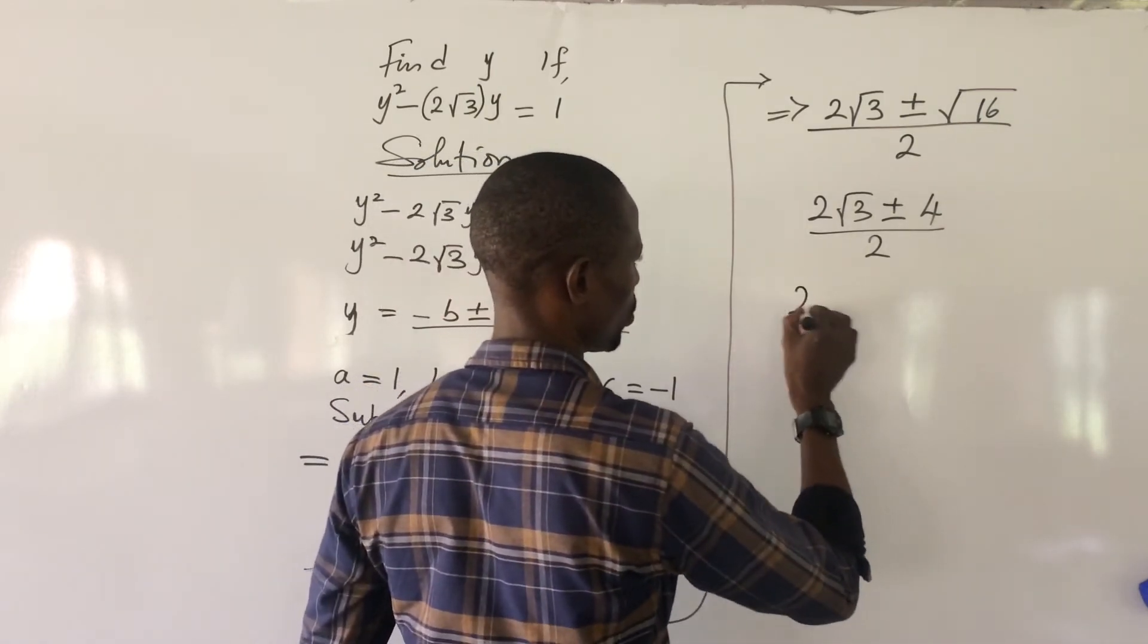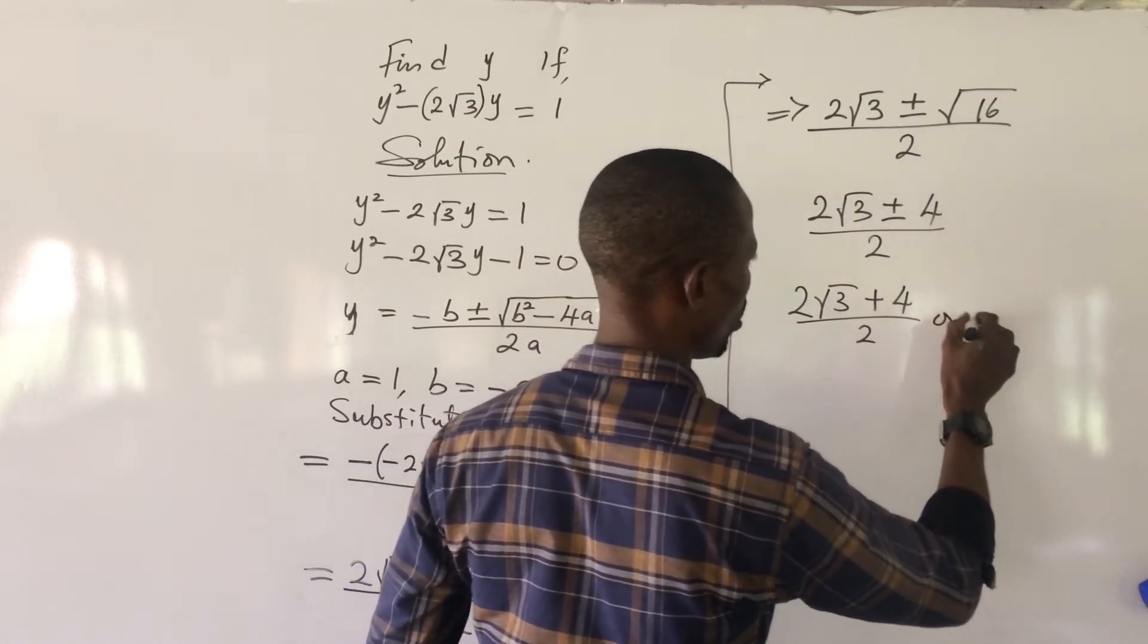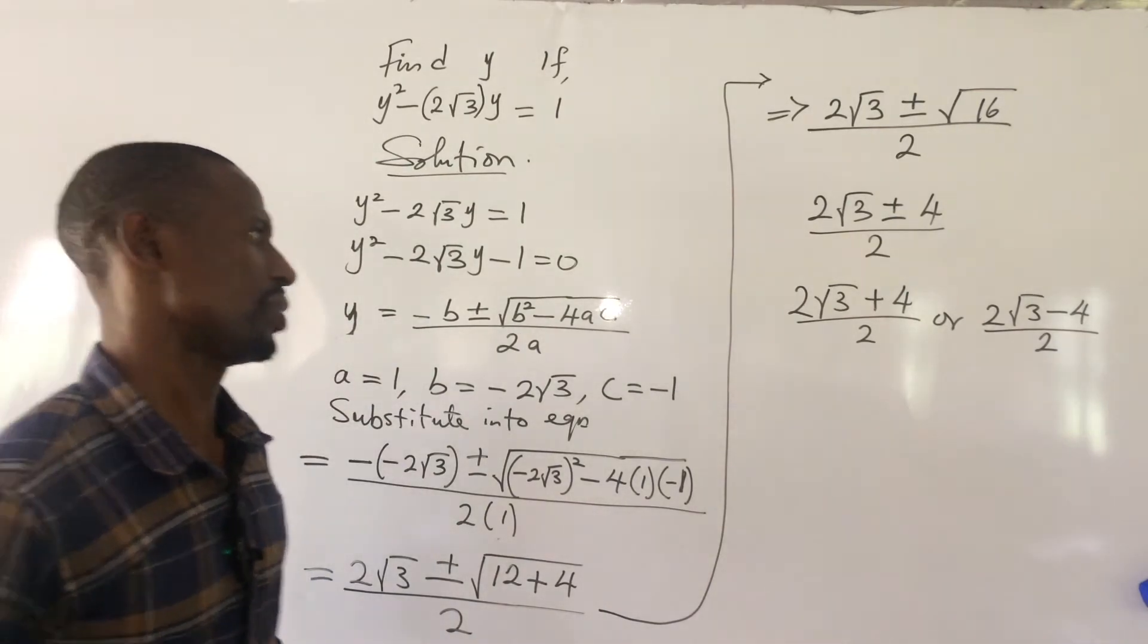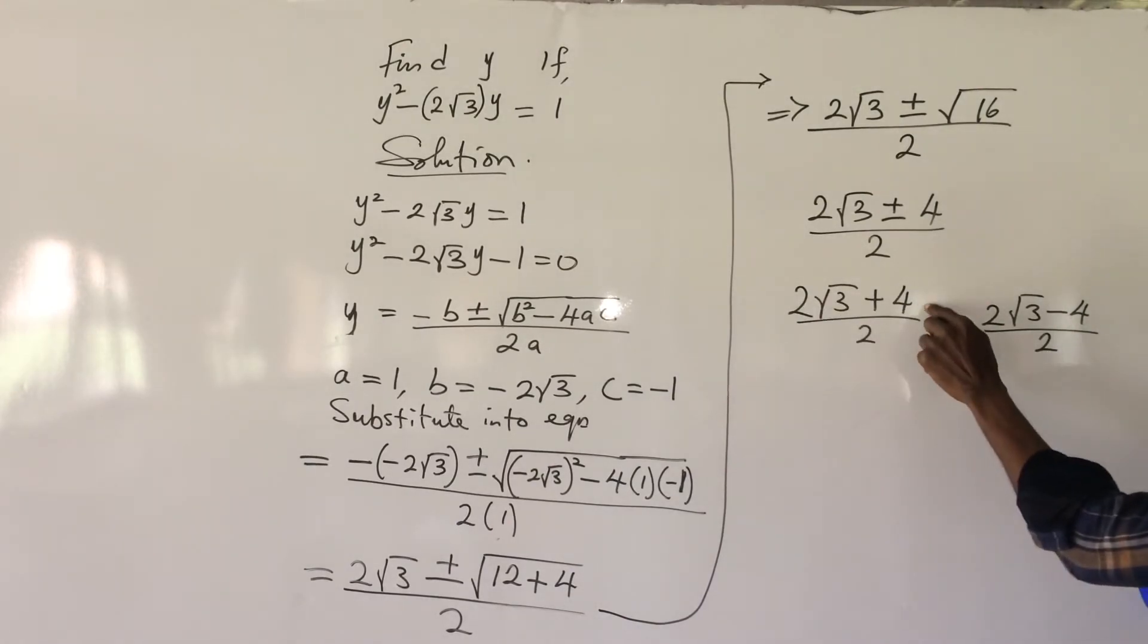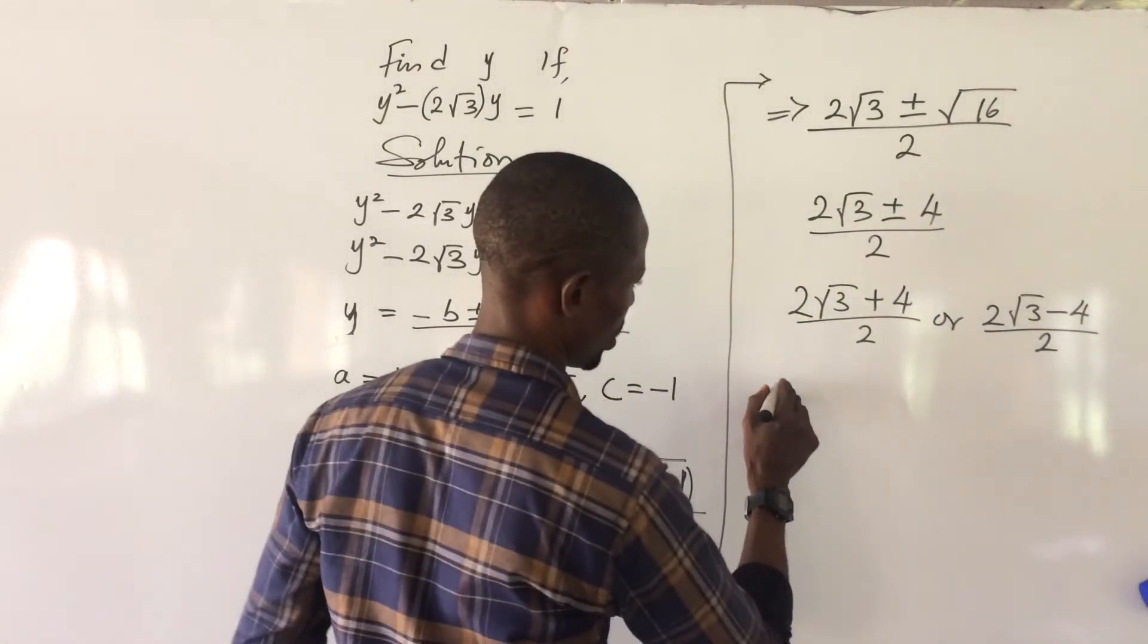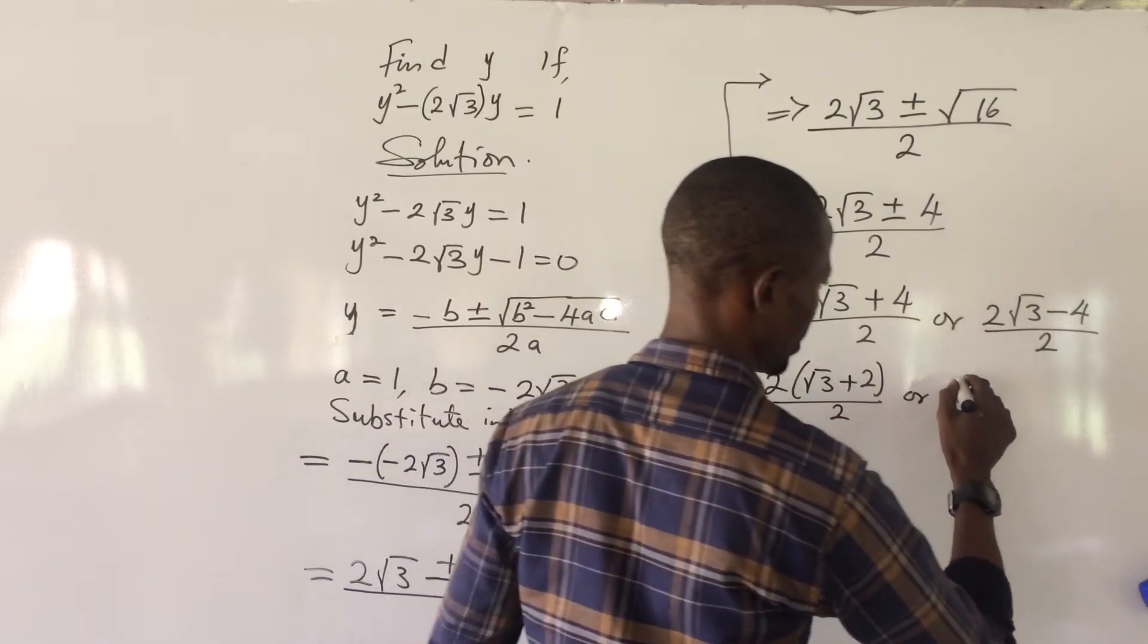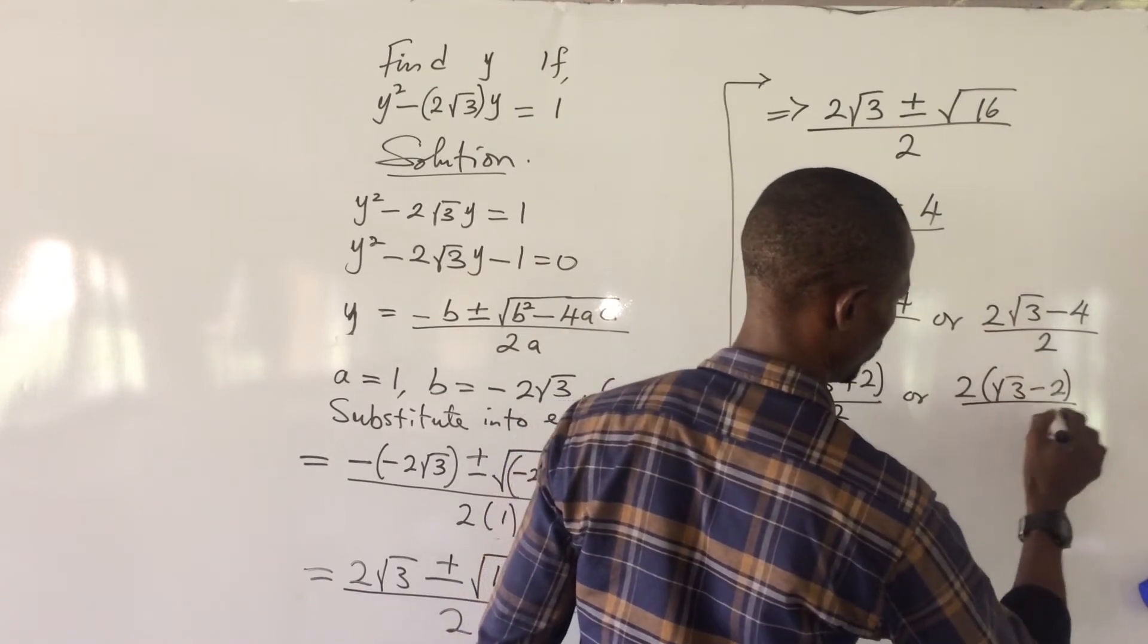So, if we do that, this will give us 2 root 3 plus 4 all over 2. Or 2 root 3 minus 4 all over 2. Very easy enough. Now, take a look at this side. This is what we call surd. So, 2 is here and 2 is a factor common to this. So, we factorize 2 out. If we do that, this will give us 2 bracket root 3 plus 2 all over 2. Or the same thing happens here. 2 bracket root 3 minus 2 all over 2.